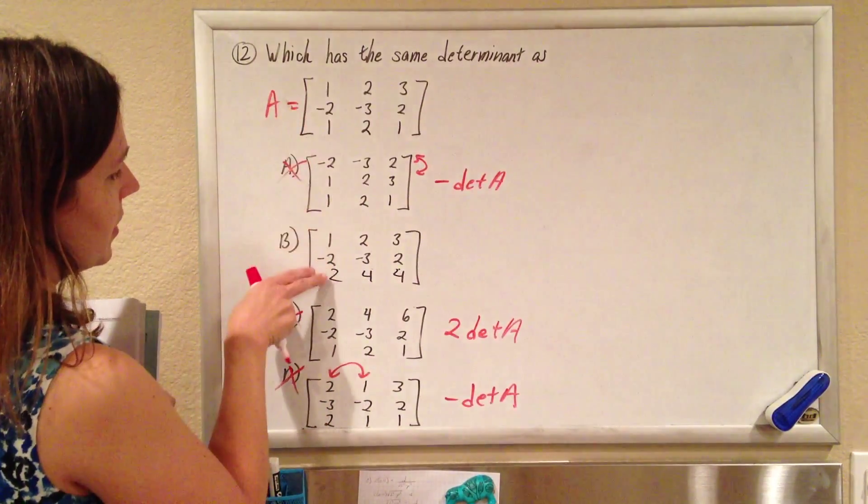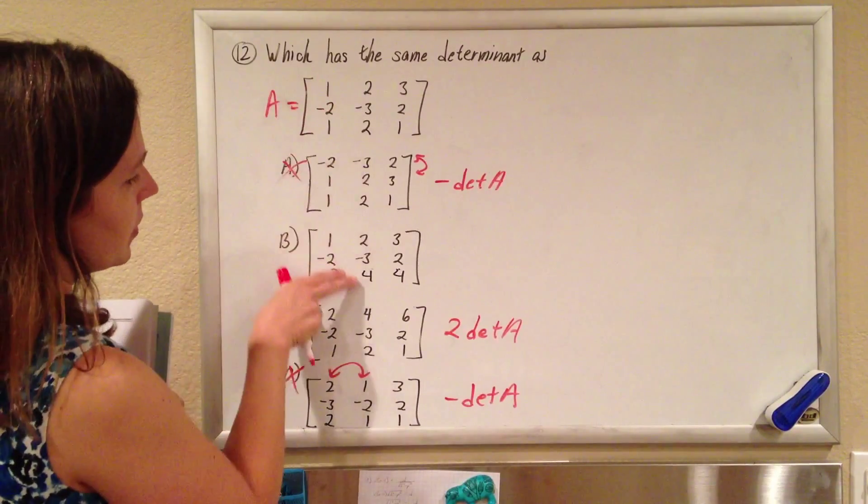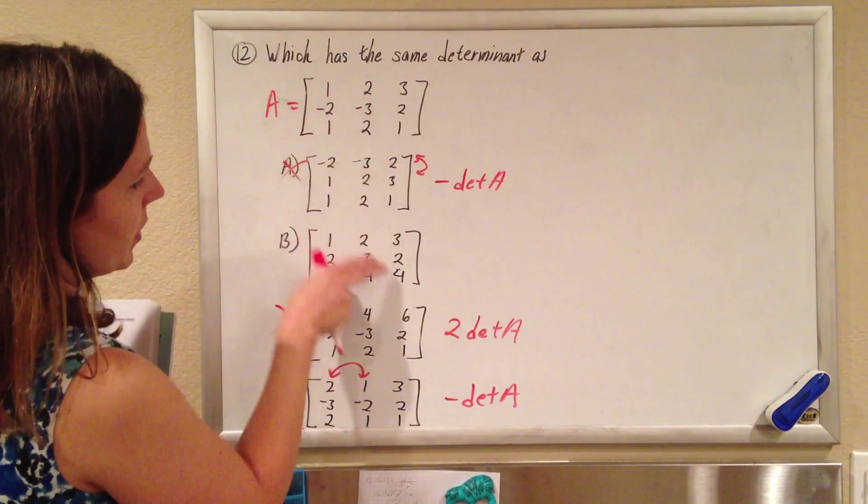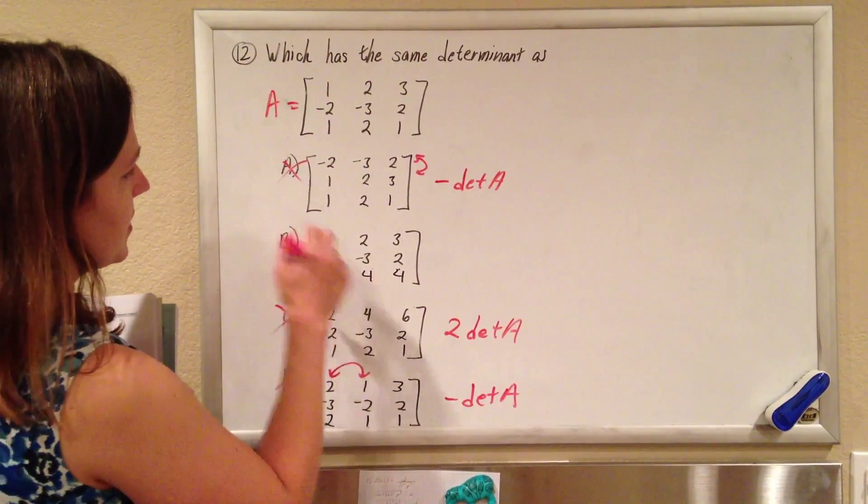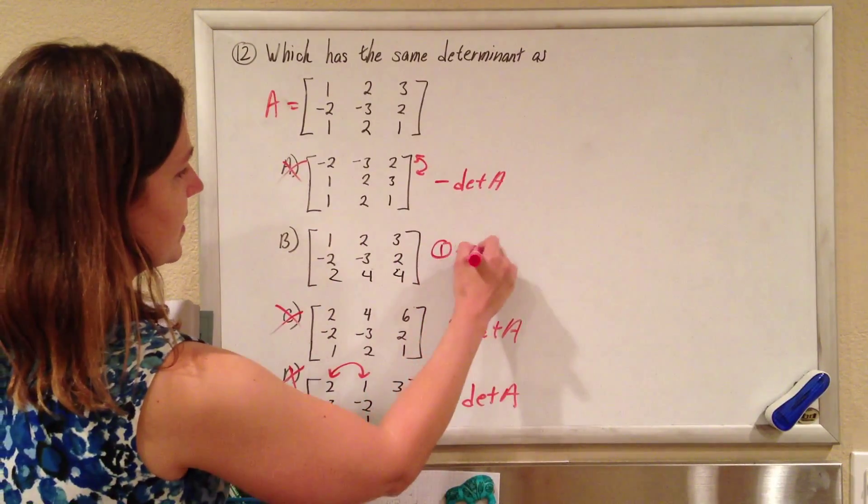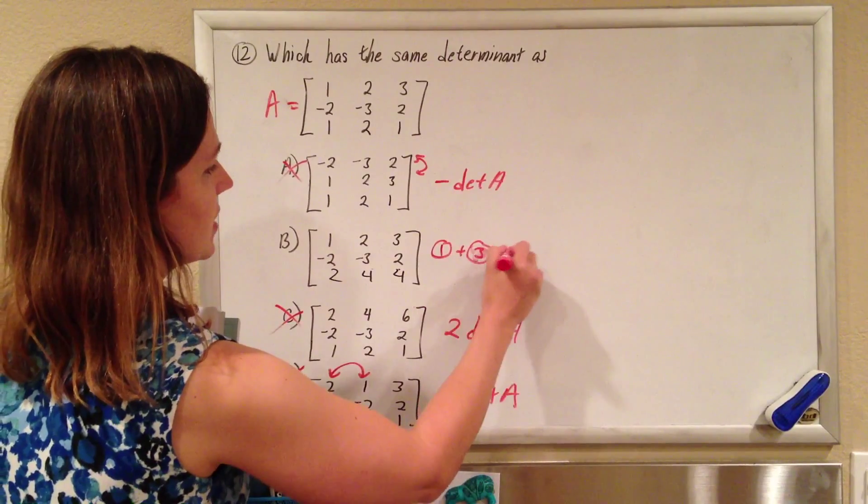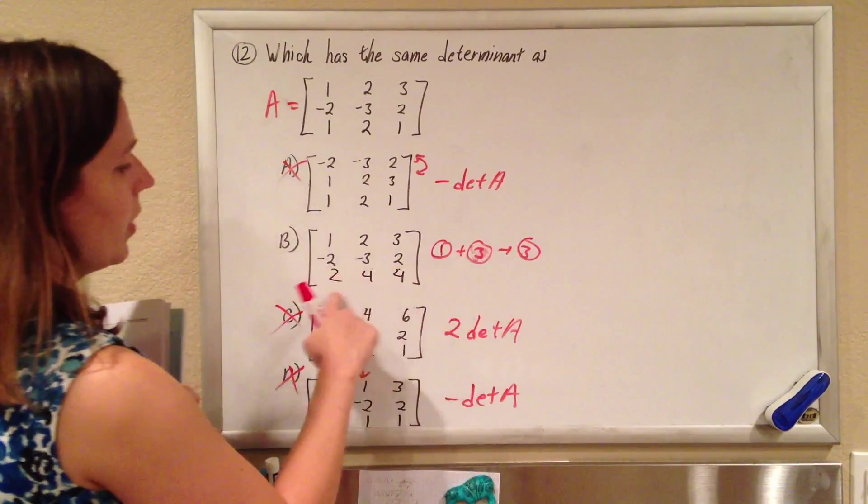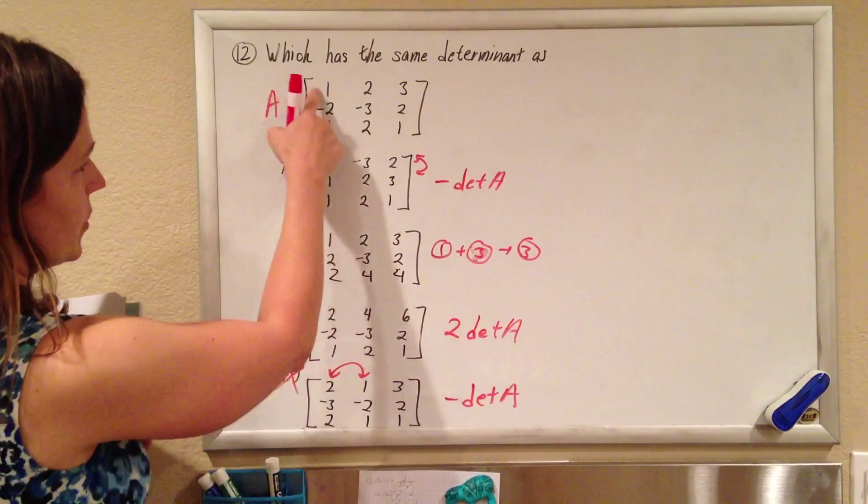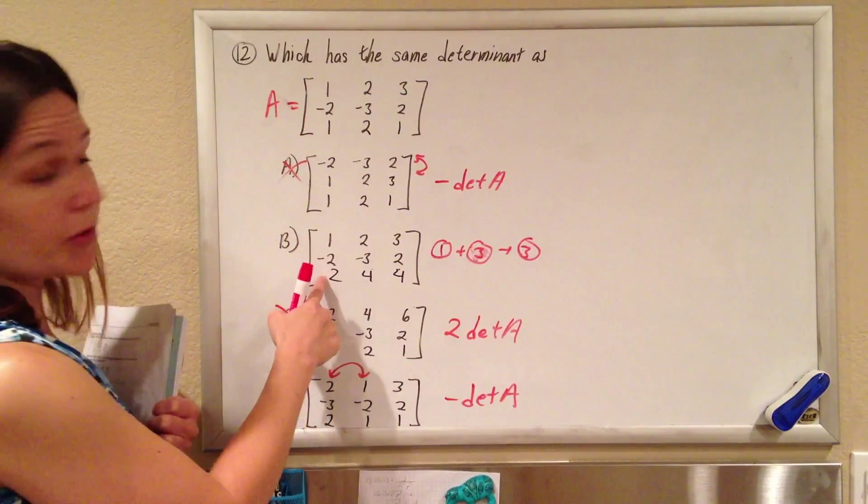Notice that one plus one is two. Two plus two is four. Three plus one is four. So all they did was they took the first row plus the third row of the original matrix to make the new third row of this one. So the first row plus the third row to make the new third row. And so that elementary row operation.